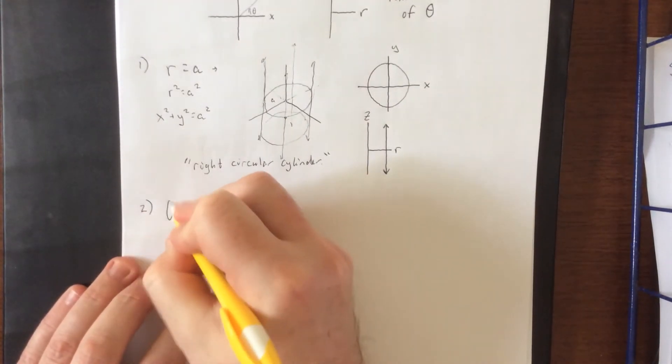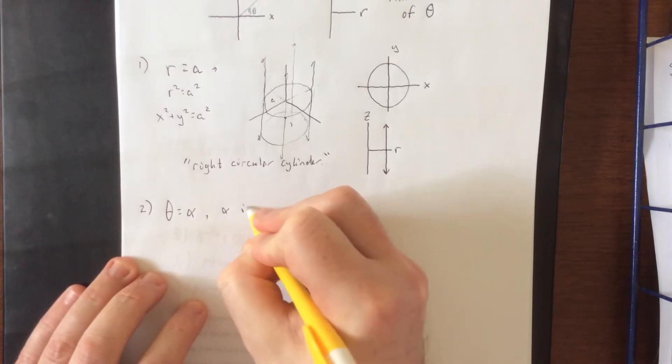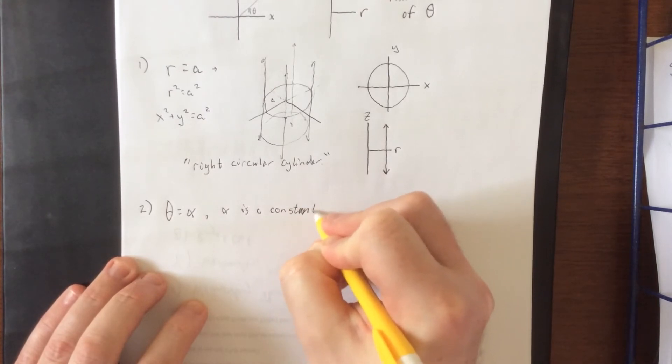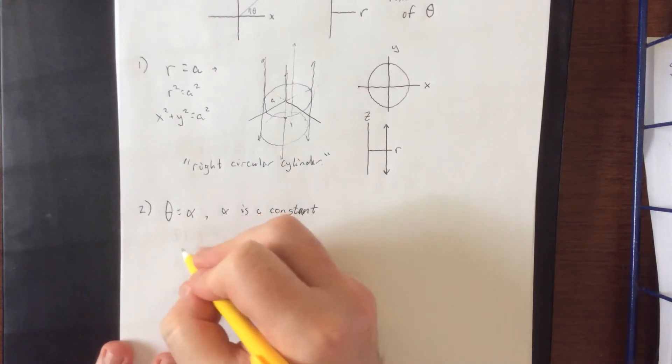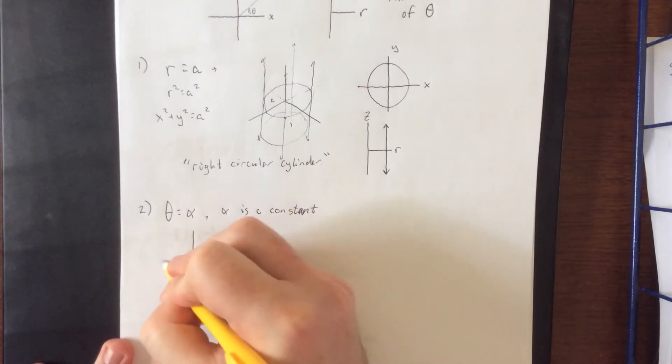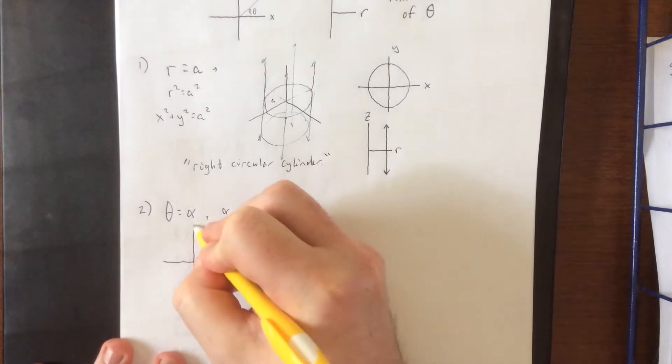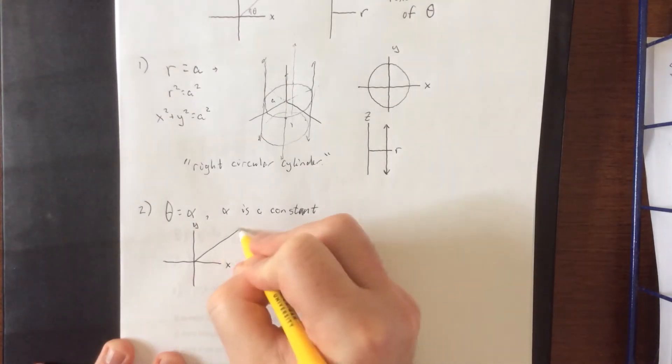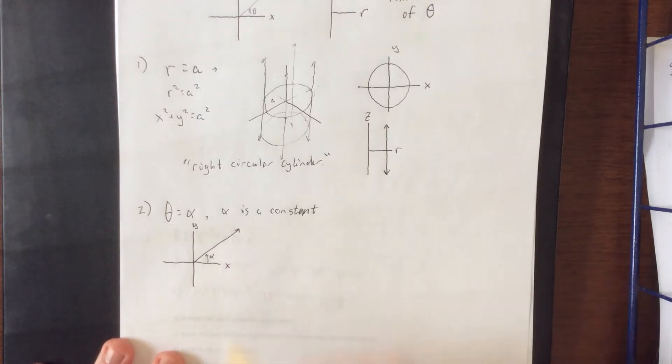Second example. We'll do theta is equal to alpha, where alpha is a constant. Now, as far as the x-y trace is concerned for theta equals a constant, we can once again define R so that it has to be a positive value. So select a direction and let that be it.